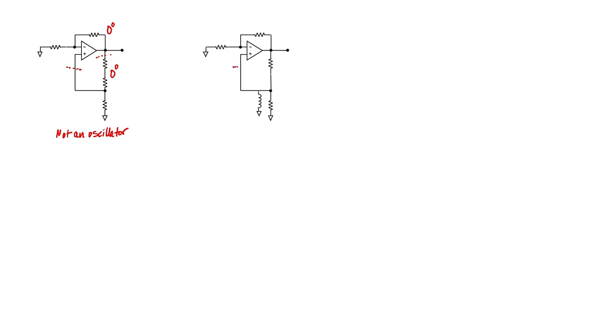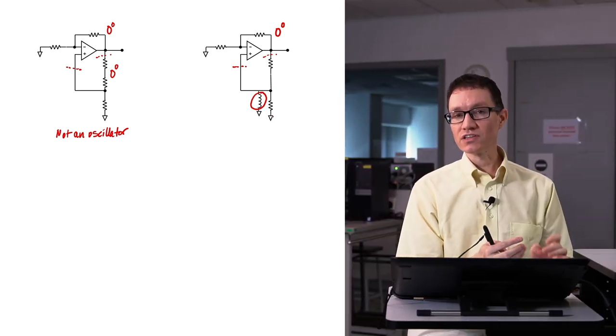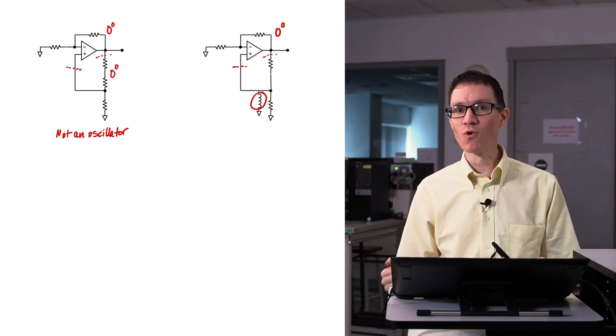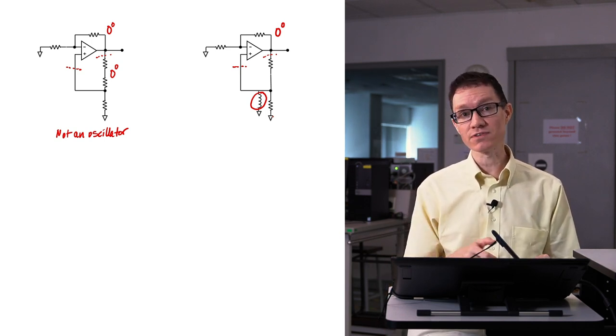In the second example, we again have a non-inverting amplifier configuration. This amplifier would impart zero-degree phase shift to any signal passing through it. However, in the feedback network, we have a single inductor. A single inductor, like a single capacitor, can never add or take away more than 90 degrees from the phase of a signal.